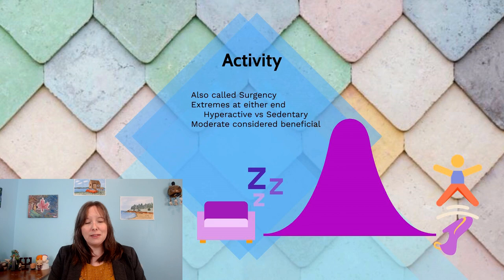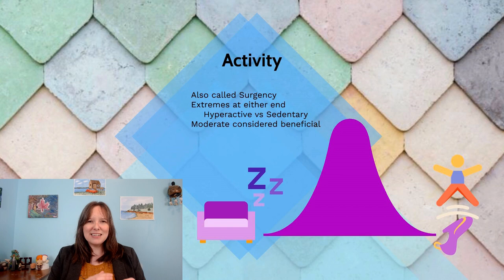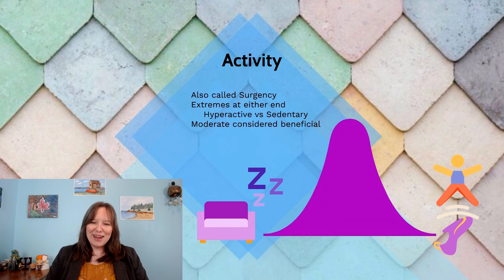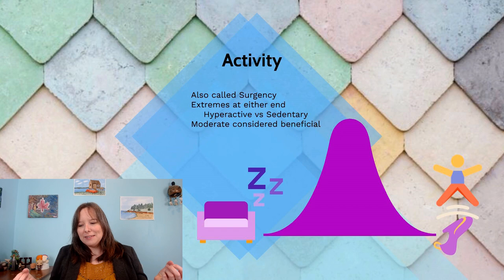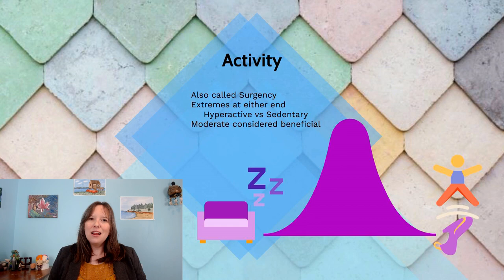On the other end of the spectrum, we can see a very sedentary child — one that doesn't move around a lot, sits and reads books, watches a lot of television, or an infant content to lay on their play mat without exploring. Most infants and children are in the middle of the spectrum, and the very extremes — extremely sedentary or extremely hyperactive — tend to be maladaptive.